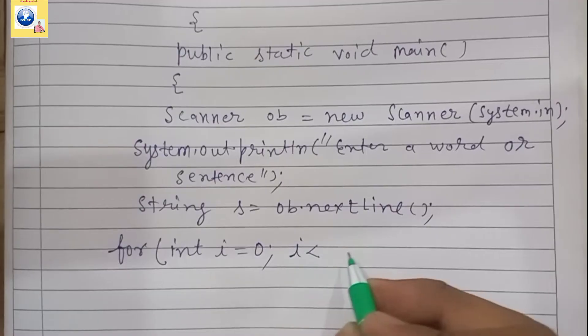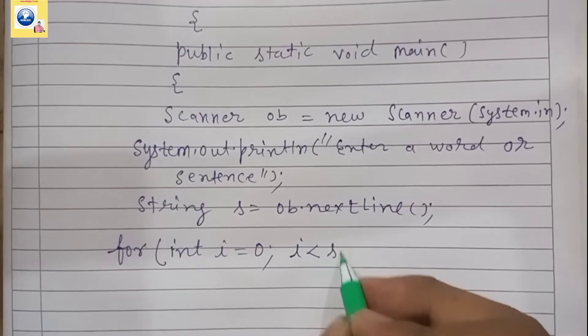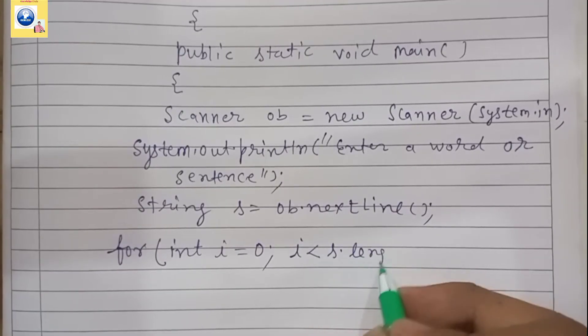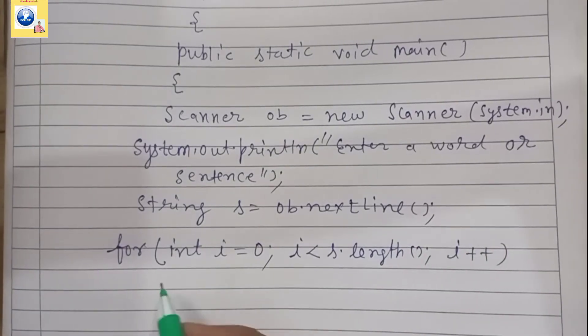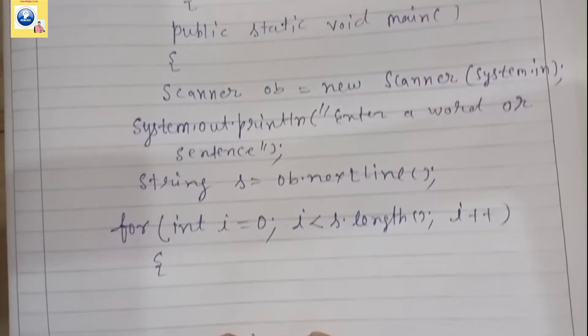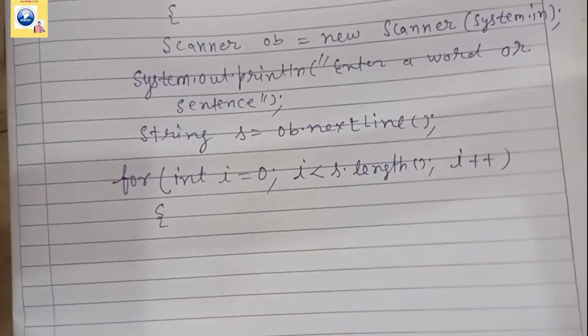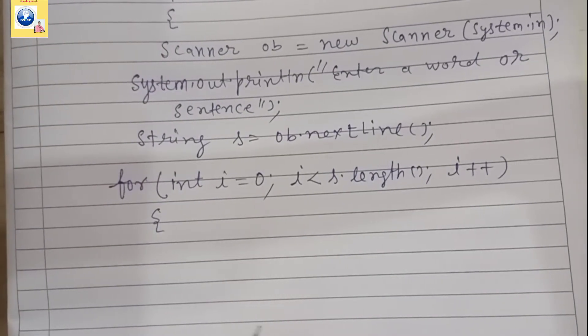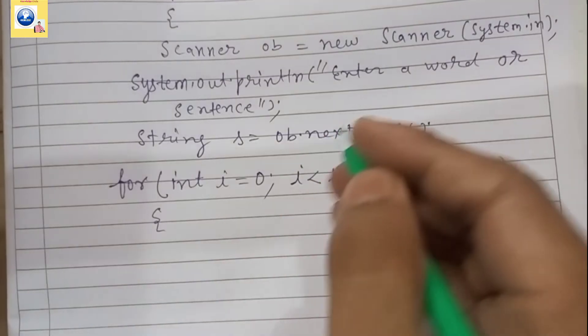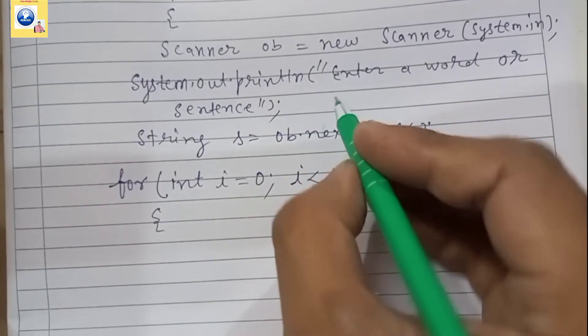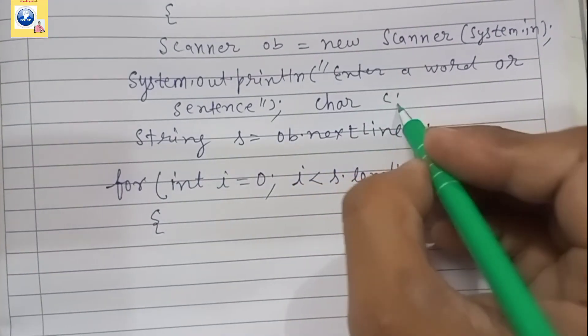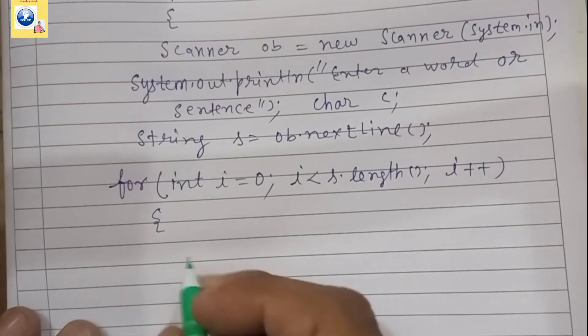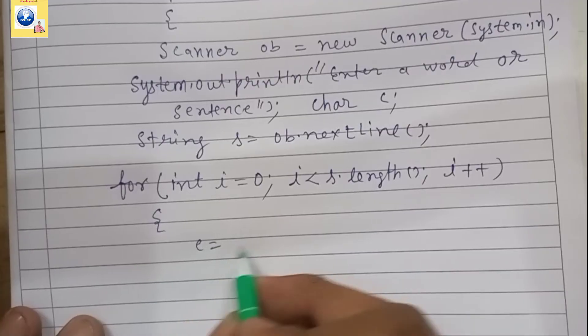We will run a for loop. Initial value of the counter variable will begin from zero and it will go less than the length, so we'll write the string name and the length method. And then i++, so loop begins. Now the next work is to check each and every character.